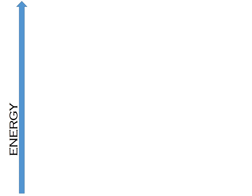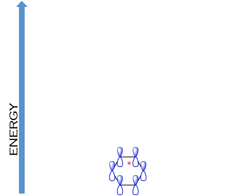On an energy scale, the first molecular orbital looks like this. We have six carbon atoms and on each carbon we have an unhybridized p orbital. This is the lowest energy orbital possible. In this first molecular orbital, the wave functions of all six p orbitals are similar on the same side of the ring — the shaded part of all six orbitals is above the ring and the unshaded part is below the ring.